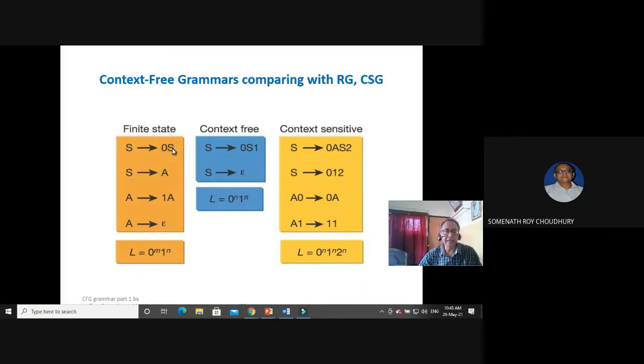You can see it is a right linear grammar because of the variable at the right. And this is a context free grammar. This is a to the power n, b to the power n. You can see with example 0 to the power n, 1 to the power n, and you see only the start variable can go to epsilon.